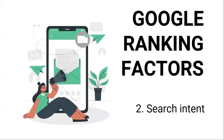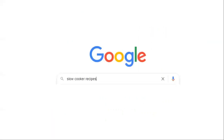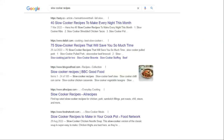Second is search intent. Search intent represents the reason behind a searcher's query. Google's goal is to return the most relevant results for any given query. You can discover search intent simply by looking at the top-ranking pages for the query you want to rank for. For example, if you search for Slow Cooker Recipes, you'll see that the results are mostly blog posts with a list of slow cooker recipes. So if you try to rank a product page where you are selling a slow cooker, you won't be matching search intent and therefore you won't rank.